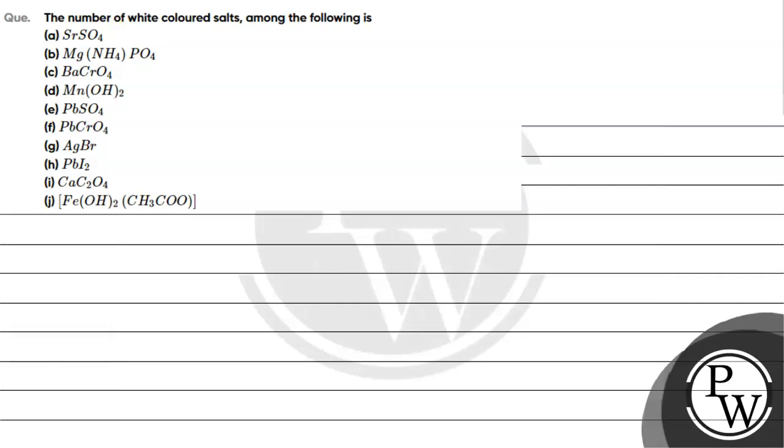Let's read this question. The question says: number of white colored salts among the following is. We will tell which white colored salts there are, right? The concept for this question is color of salts.